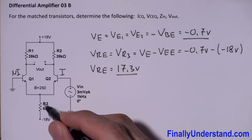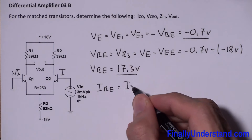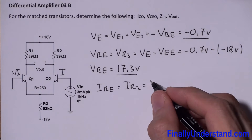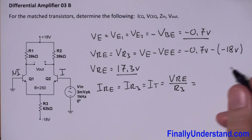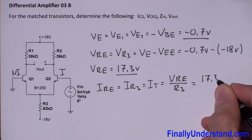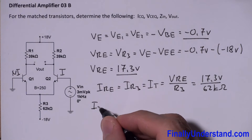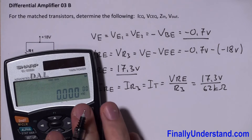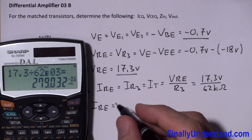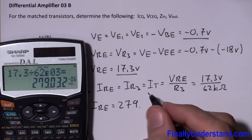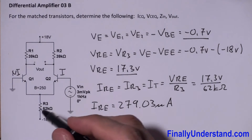Next, I can find the current going through resistor R3. IR3, also called ITALE, equals VRE3 divided by R3. This equals 17.3V over 62kΩ. So IR3 equals 17.3V divided by 62×10³, which equals 279.03μA. This is the current which goes through resistor R3.